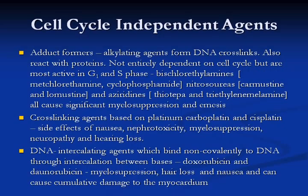There are also platinum-based crosslinking agents — carboplatin and cisplatin. These cause nausea, nephrotoxicity, myelosuppression, and cumulative neuropathy that can progress even after stopping the drug, as well as hearing loss — a neuropathy that is not reversible. DNA-intercalating agents such as doxorubicin and daunorubicin bind non-covalently to DNA between bases, cause hair loss, and importantly, cause cumulative damage to the myocardium, resulting in heart failure.